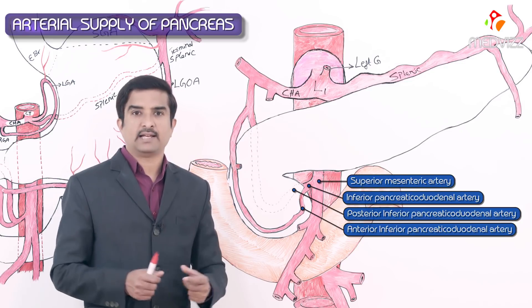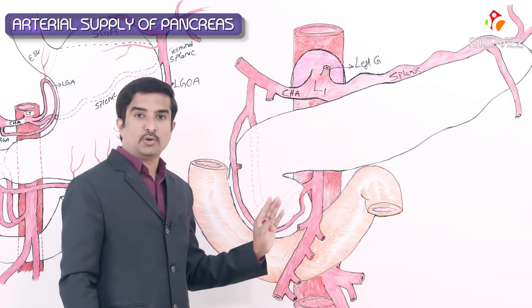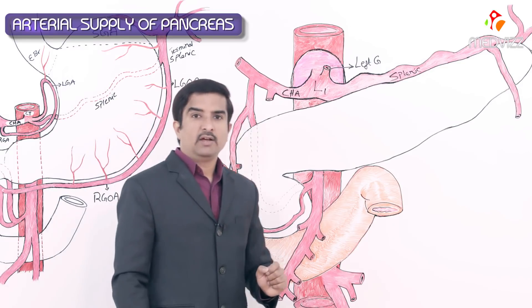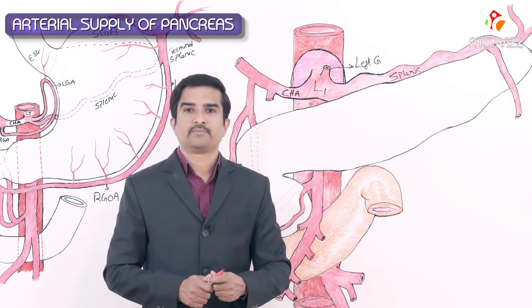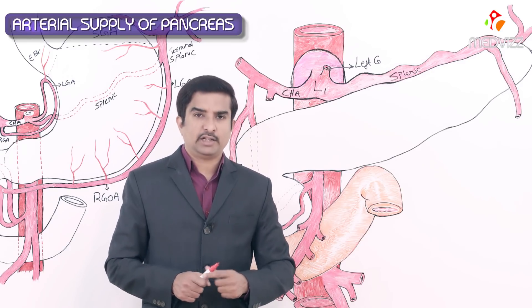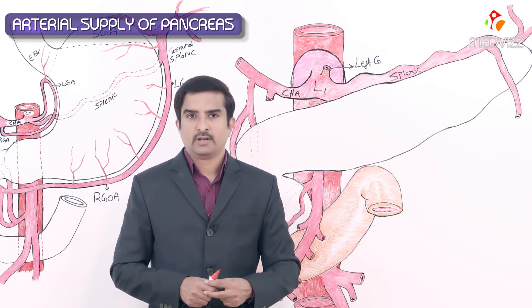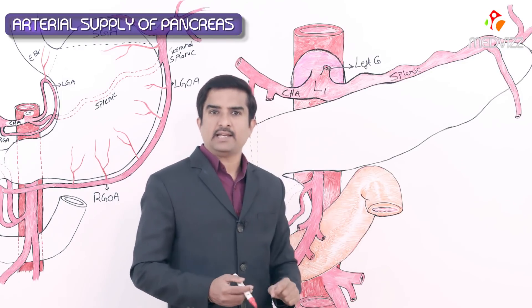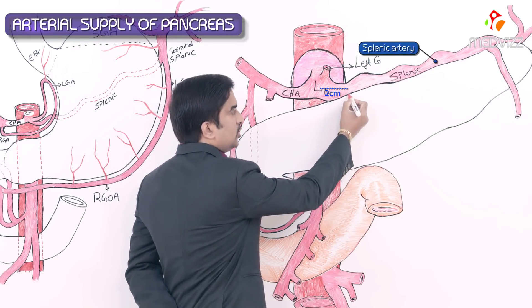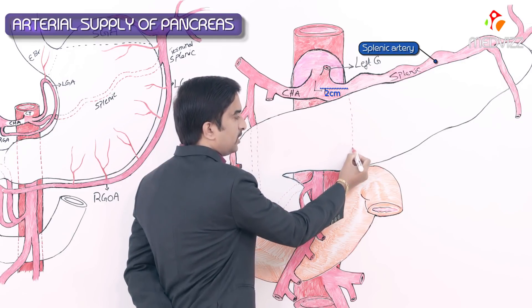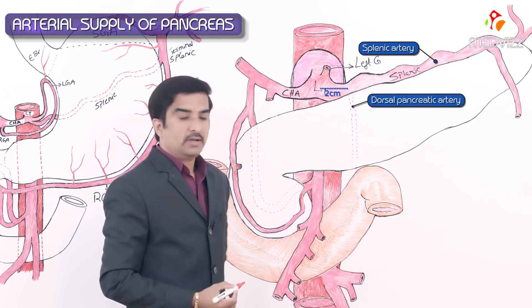After the pancreaticoduodenal arcades, the next — and most controversial — artery is the dorsal pancreatic artery. It is controversial because there are too many variations. The dorsal pancreatic artery commonly arises from the initial two centimeters of the splenic artery.